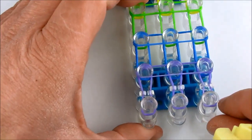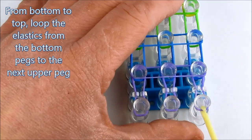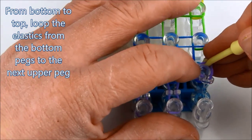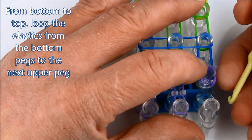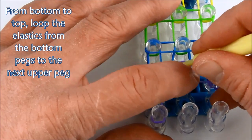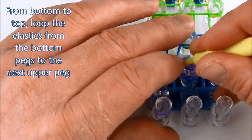From the bottom to the top, we now loop the elastic. So we bring the bottom elastic up to the peg that's immediately above it. And we repeat this process with all three columns of pegs.